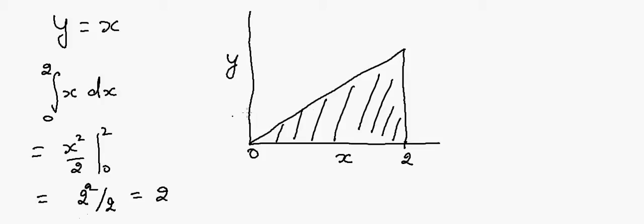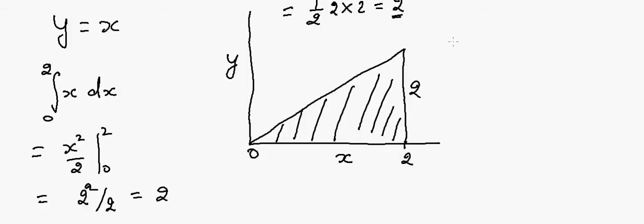Another way to do the same thing is to just look at this triangle — the base is 2 and the height is 2. So the area of the triangle is equal to half times base times height, which again gives us 2.